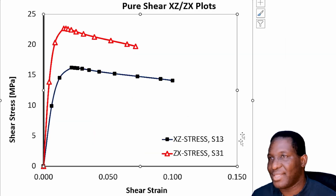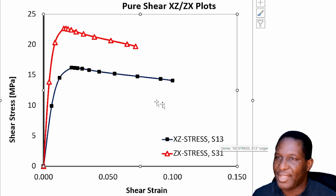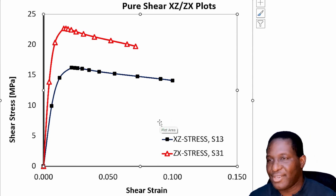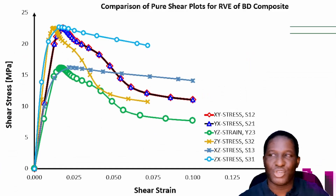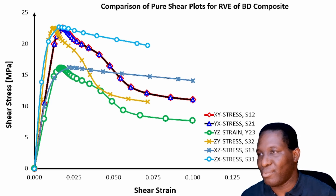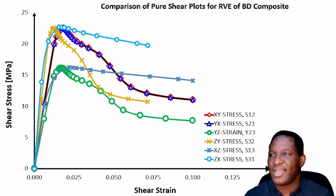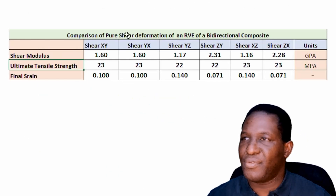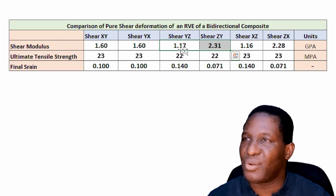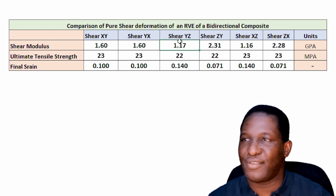The result for the XZ plane shows that the 1-3 plane (black) and the 3-1 plane (red) differ, with the fiber-dominated direction in the third axis clearly showing more load bearing compared to the other. Comparing all three datasets together, we see some are about the same and there's consistency overall. There's a little variation in shear modulus as expected, but the behavior seems consistent, and the strength values generated also show consistency.